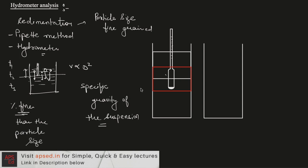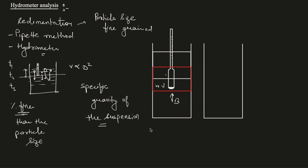When we put the hydrometer in the suspension, its weight W is balanced by the buoyancy force from the suspension. This buoyant force depends on the unit weight of the suspension — gamma suspension. So the buoyant force is a function of this unit weight, or equivalently the specific gravity.